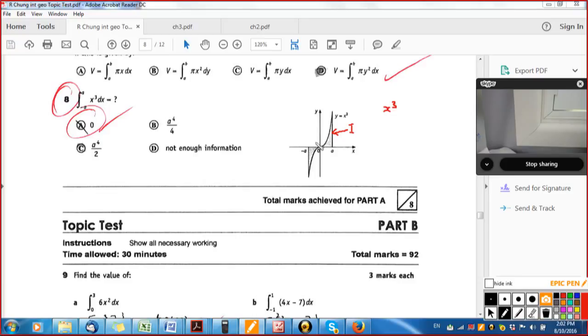Now when you combine the two integrals, right, on either side of zero, what do you think happens? You got a positive integral plus a negative integral, right?